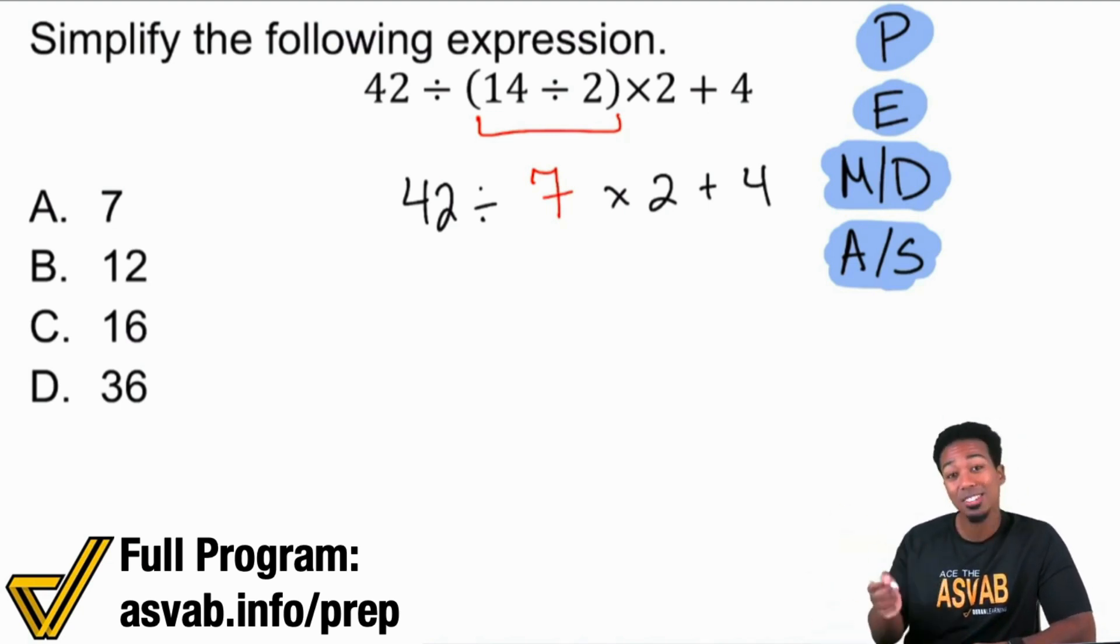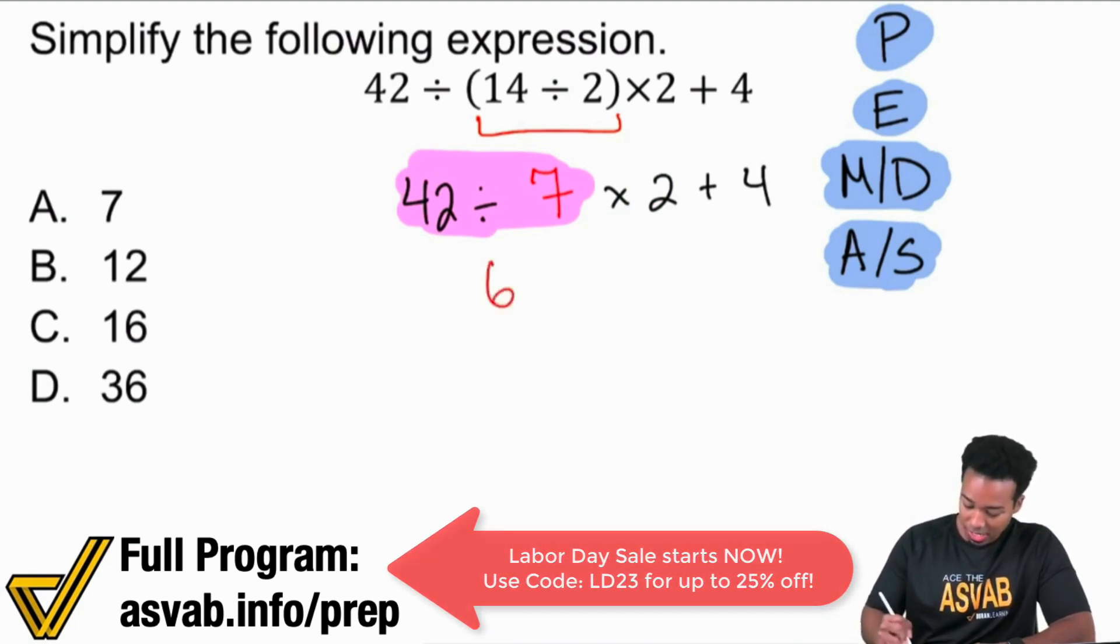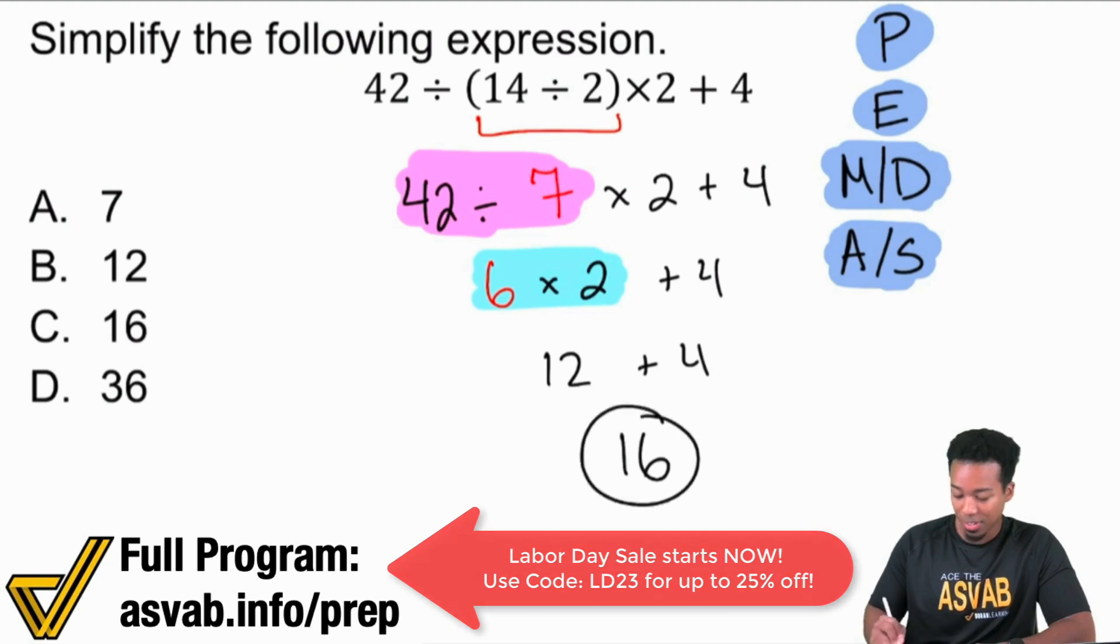And again, multiplication and division are the same operation. And so I'm looking at this right here thinking, this is not what I should be doing, because division comes first here. Division comes first. And so 42 divided by 7, that's going to give us 6. And then everything else is nice and smooth right after. Because now I'll just go ahead and take care of 6 multiplied by 2, which will give me 12. Then we add 4 and that's going to give us 16. And that's why, right there, C is the answer.